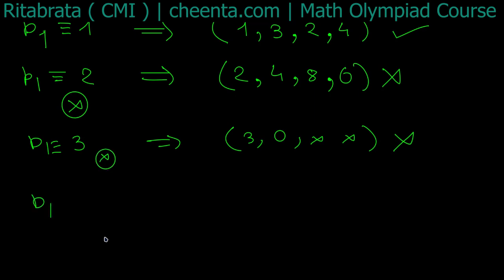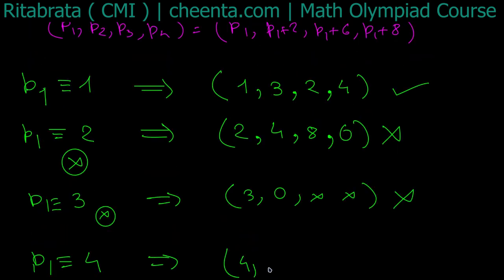Similarly, you can see that p1 congruent to 4 mod 5 gives me 4, 4 + 2 = 6, that is 1, 4 + 6 = 10. So p3 is congruent to 0 mod 5. So 5 divides p3. So this is also not a solution.